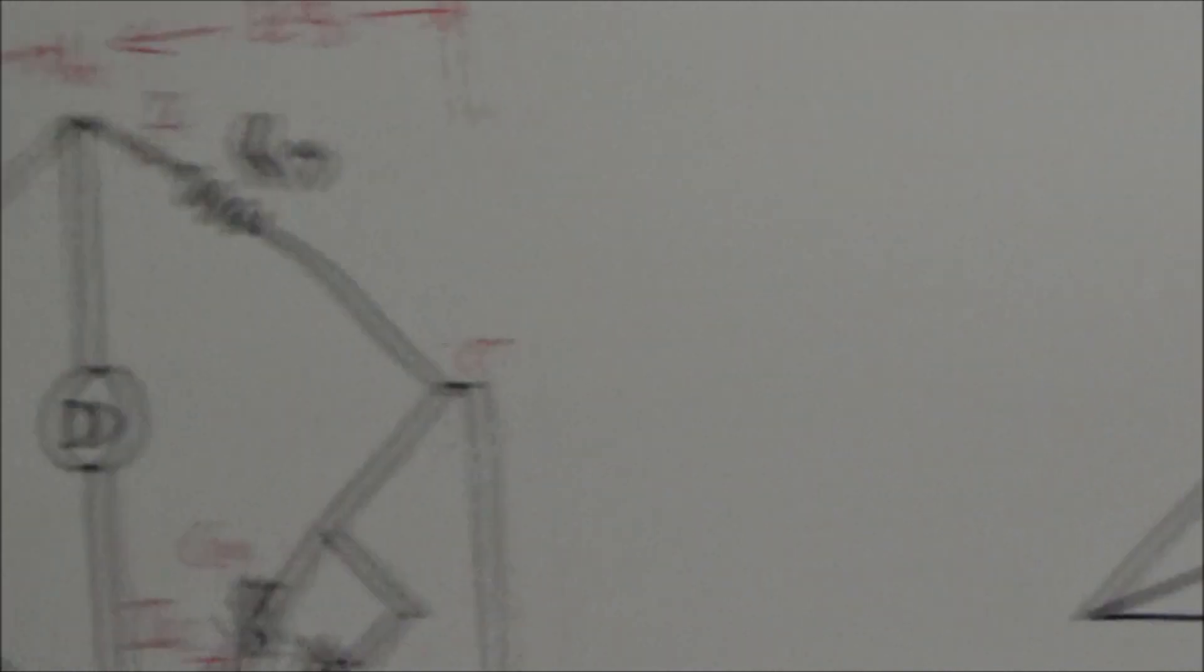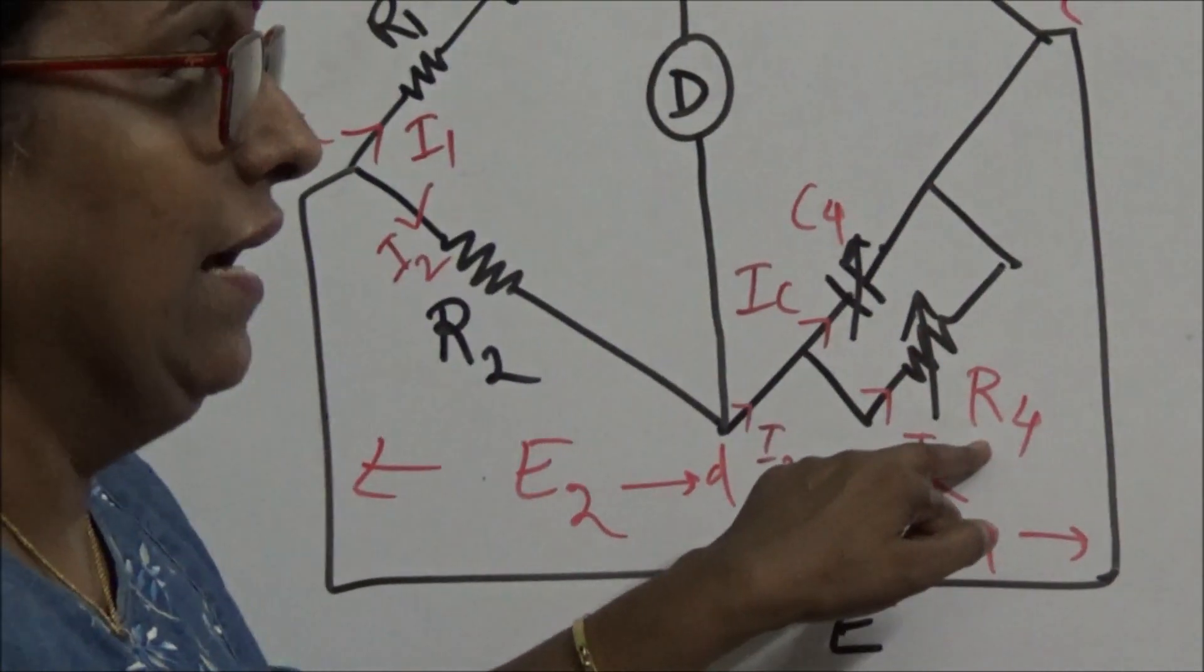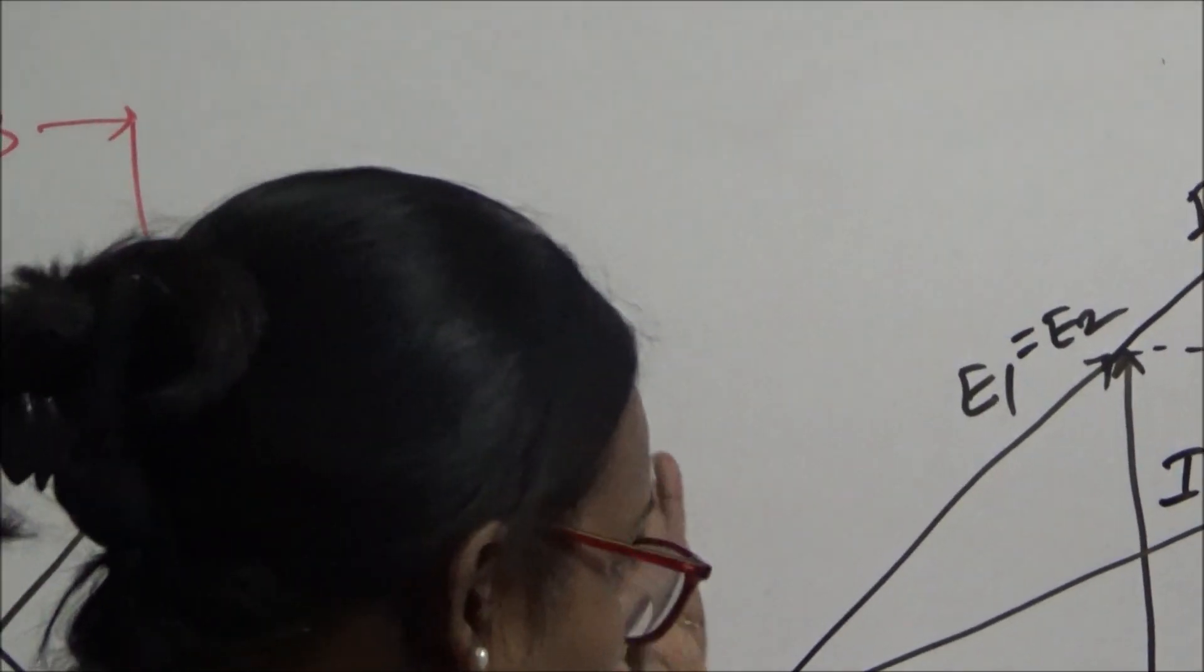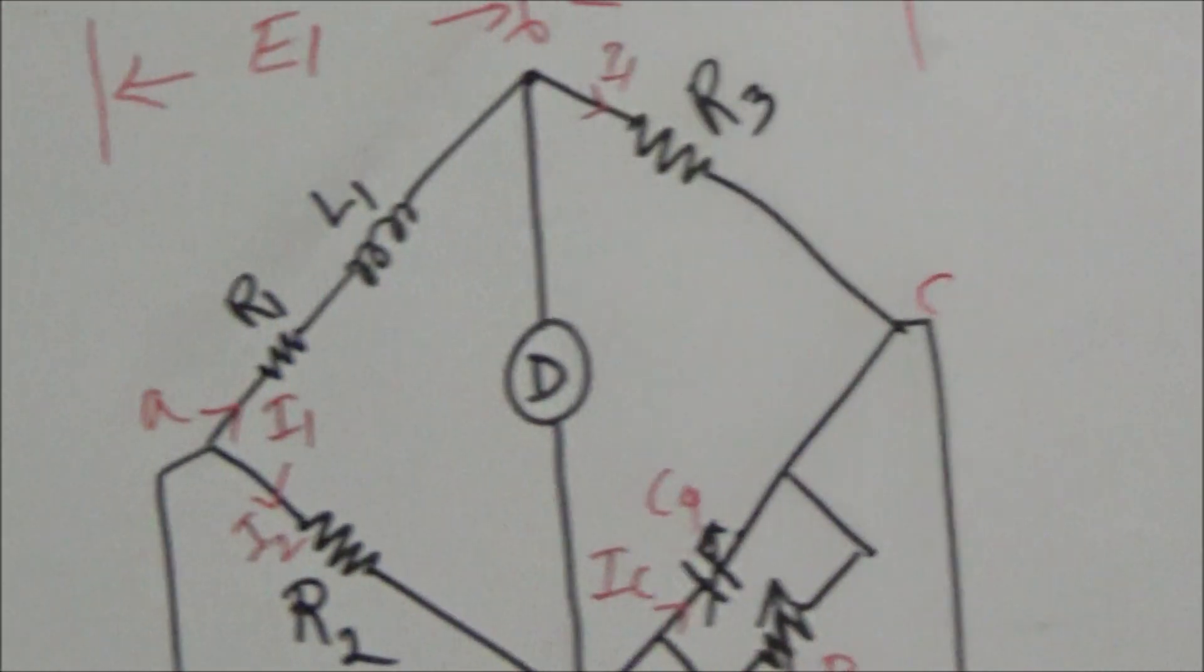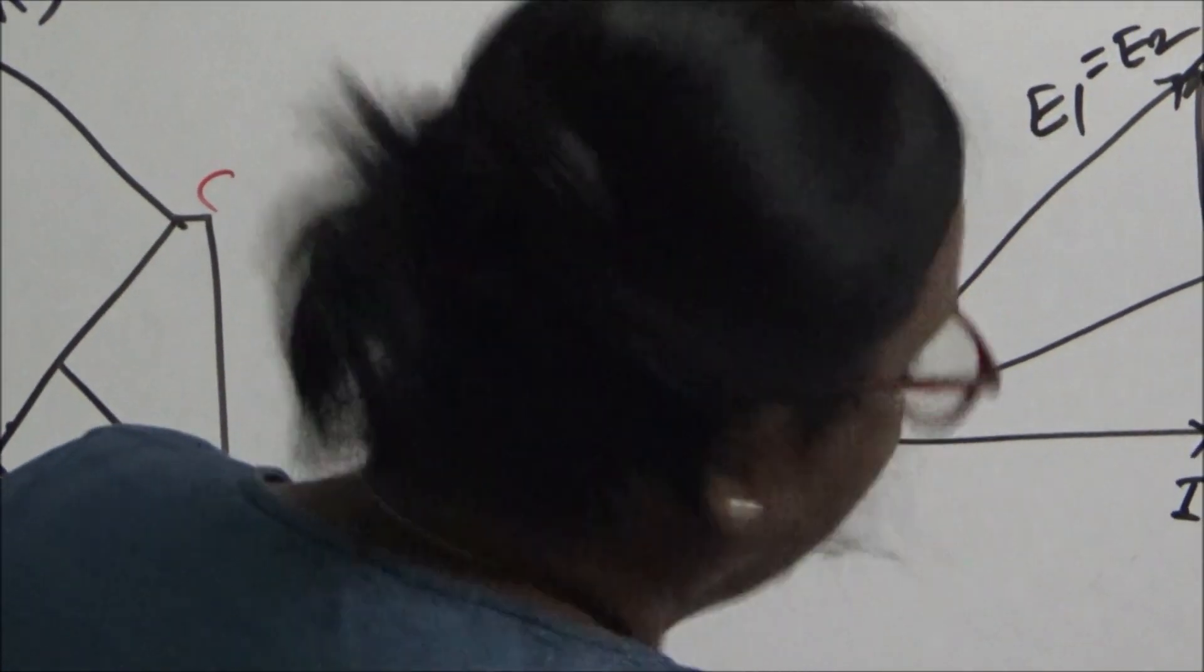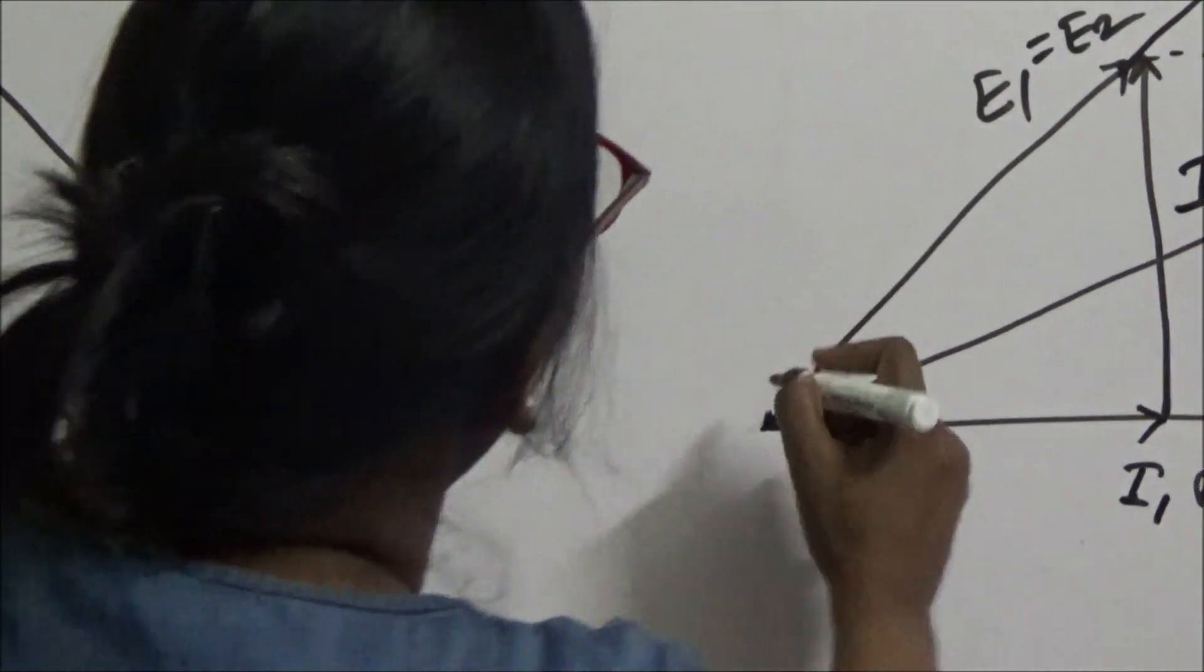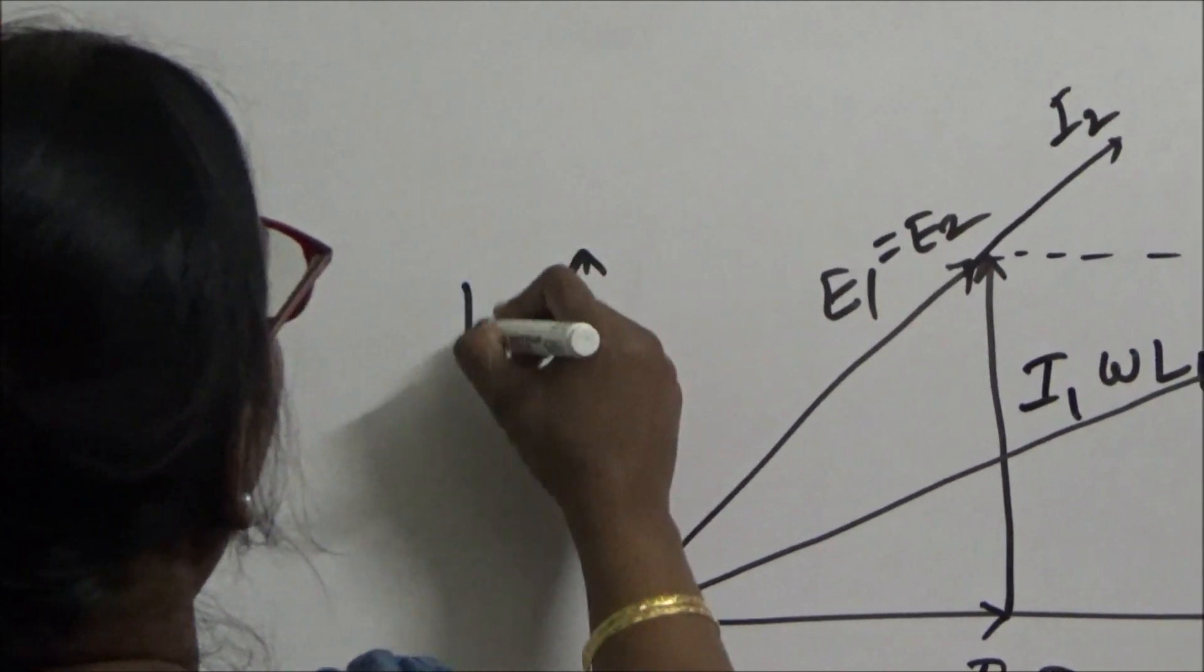Now the important thing is this I2. This I2 is the phasor sum of IC plus IR. So I can see I2 is here. Now the current through the capacitor must lead the potential. That is the potential, this is E4. So it will lead it by 90 degrees. So this is my IC.